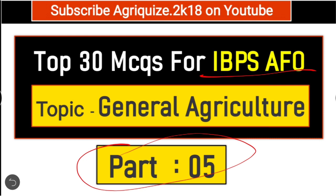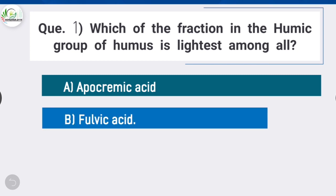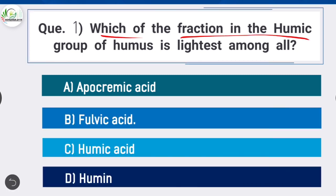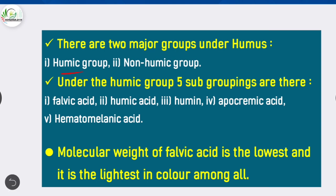Subscribe to our YouTube channel for more videos. Question 1: Which fraction in the humic group of humus is lightest among all? Option B is correct: fulvic acid. There are two major groups under humus — the humic group and the non-humic group. Under the humic group, five subgroupings are there: fulvic acid, humic acid, humine, apocrenic acid, and hematomelanic acid.